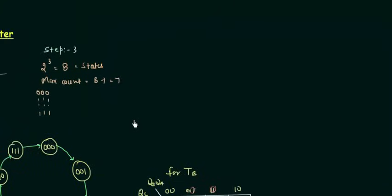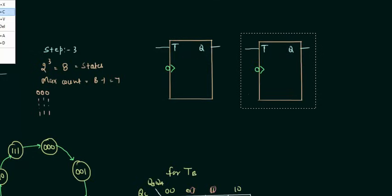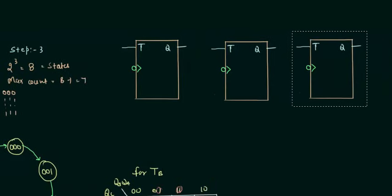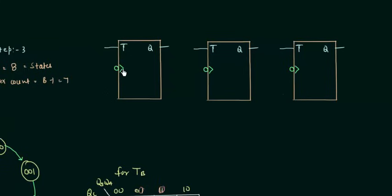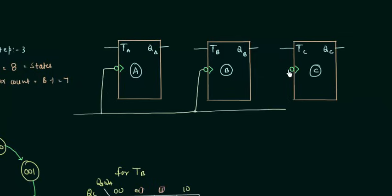Now we implement the circuit — this is the last step. We have three T flip-flops: the A flip-flop, B flip-flop, and C flip-flop. TA is the input for the A flip-flop and QA is its output. Similarly TB and QB for B, and TC and QC for C. Since we are designing a synchronous counter, a common clock is given to all three flip-flops simultaneously.